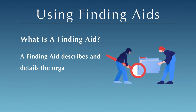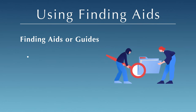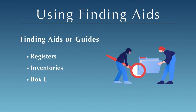A finding aid describes and details the organization and contents of a collection. The words finding aids or finding guides incorporate the more narrow terms registers, inventories, and box lists. All of these items are tools created by archivists to help you navigate archival and manuscript collections.